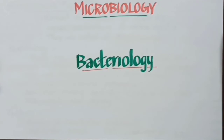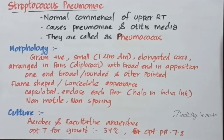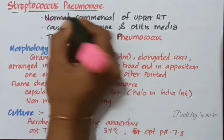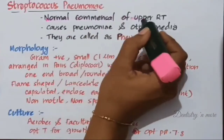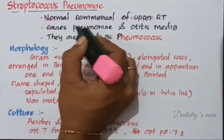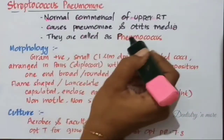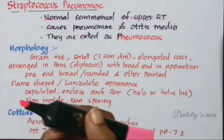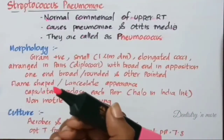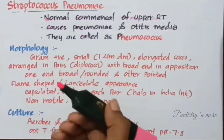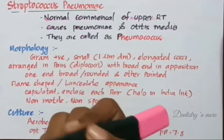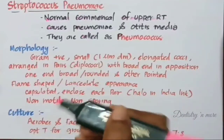In this bacteriology session, we will be discussing Streptococcus pneumoniae. They are normal commensals of the upper respiratory tract and usually cause pneumonia and otitis media, especially in children. They are frequently called pneumococcus and were later reclassified as Streptococcus pneumoniae because of their genetic relatedness to Streptococcus.